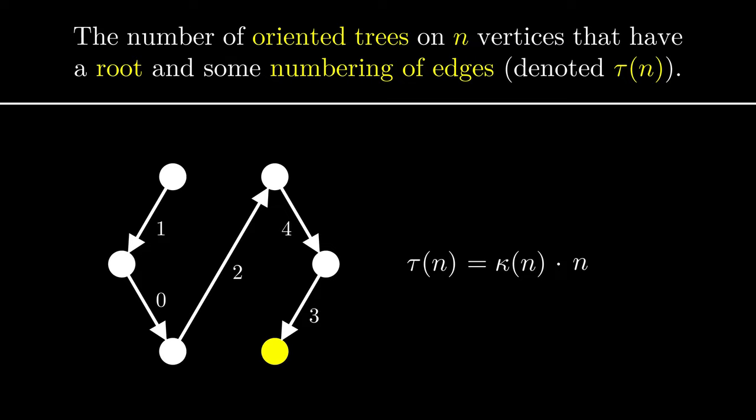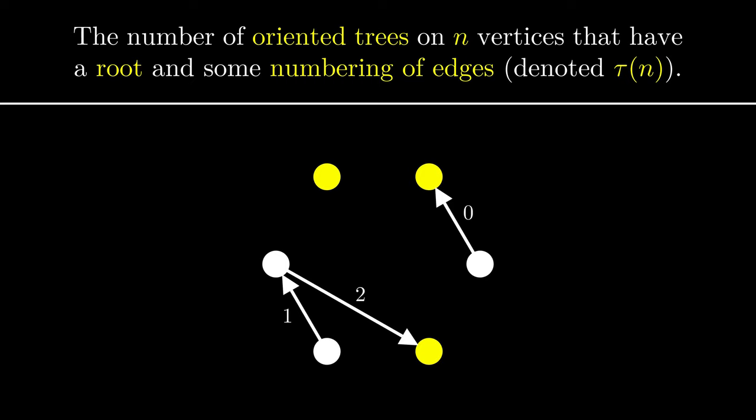The other way will be constructive. We'll build the tree by adding oriented edges between the vertices, with numbers depending on when they were added. Looking at the example graph, we can make two observations about the edge we're about to add. It has to start in the root of a component, because otherwise some edges wouldn't be pointing towards the root.